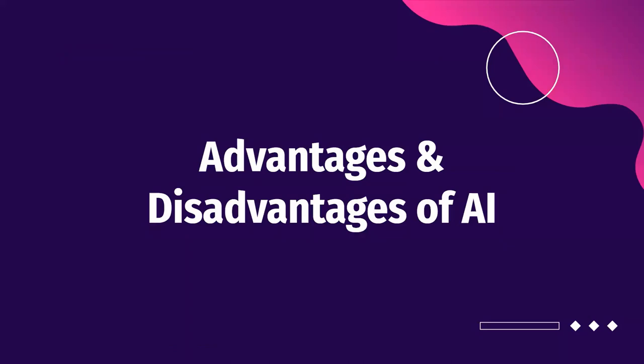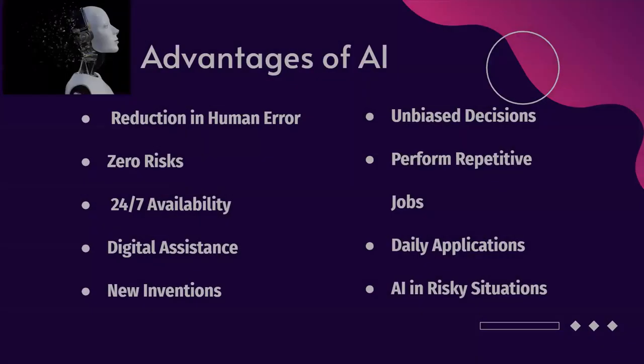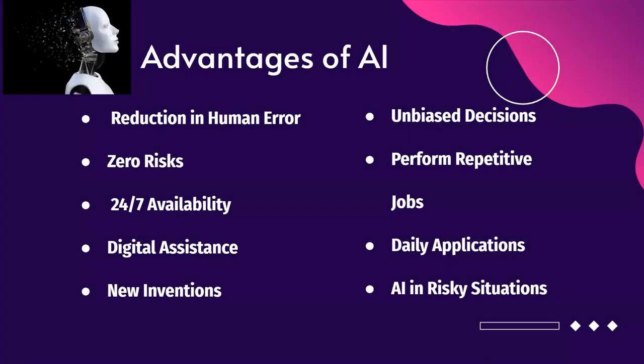So what are some of the advantages and disadvantages of artificial intelligence? Some of the advantages are reduction in the process of human error, there's a lot less risks, and a lot more availability since it's automated. It provides digital assistance, helps create new inventions, and can help make more logical and unbiased decisions and do more repetitive jobs. There's a lot of applications for it in your daily lives, and it can be used to replace humans in risky situations.